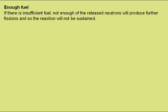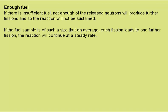We need sufficient fuel to be present. If there is insufficient fuel, not enough of the released neutrons will produce further fissions and so the chain reaction will not be sustained. If the fuel sample is of such a size that on average each fission will lead to one further fission, the reaction will continue at a steady rate. This mass is called the critical mass.